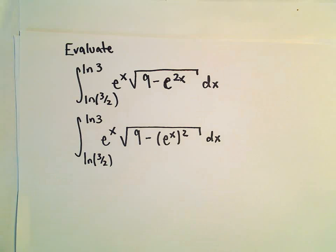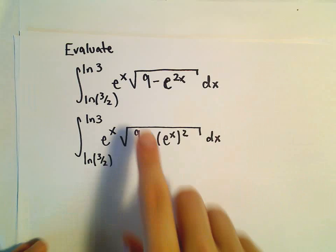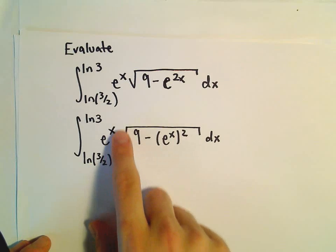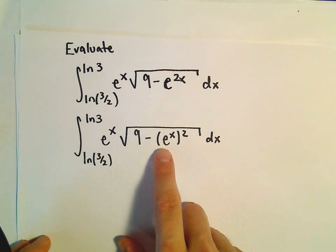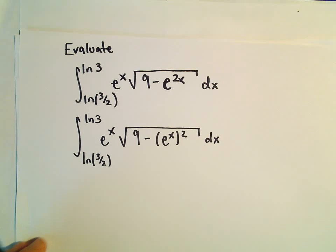If I solve this just out of the blue, I would be thinking either u substitutions, or I see the square root, I see 9 minus something squared, so I would think maybe eventually we can do a trig substitution.